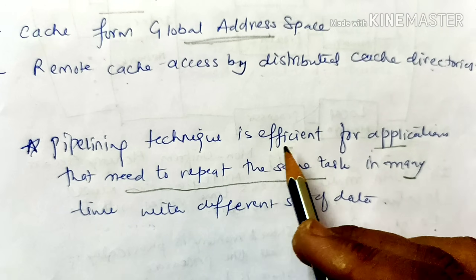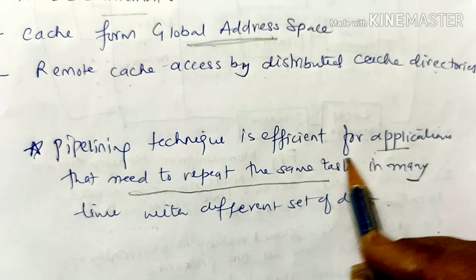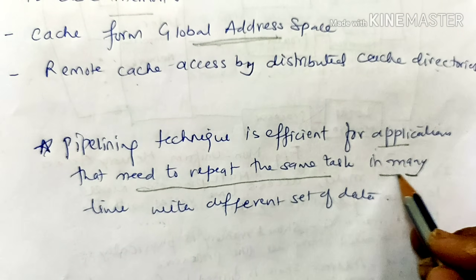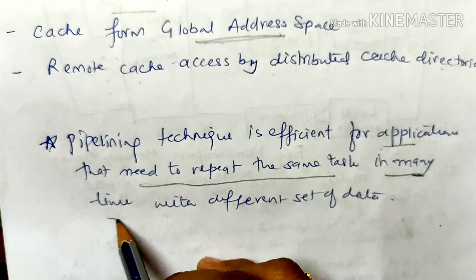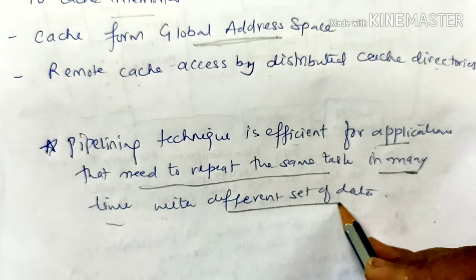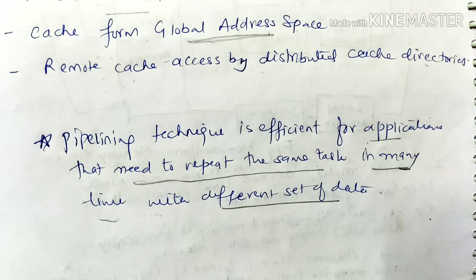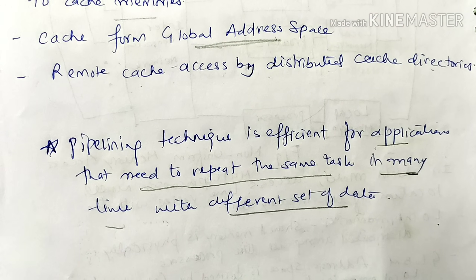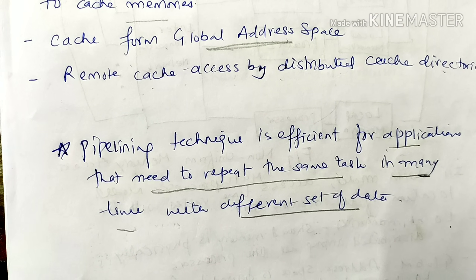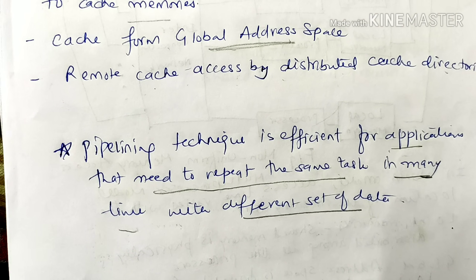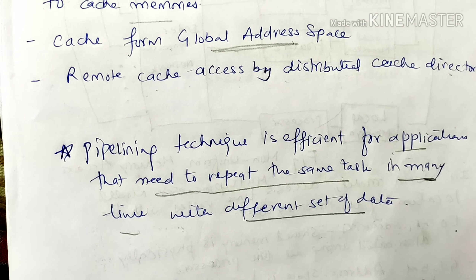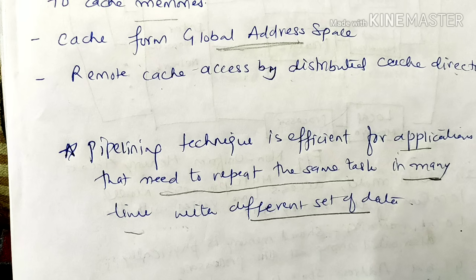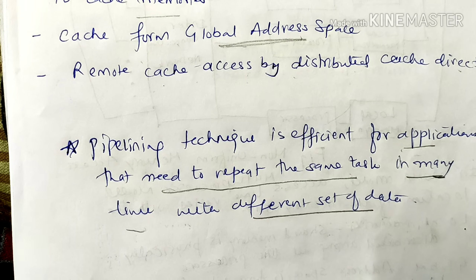Pipelining technique is efficient for applications that need to repeat the same task many times with a different set of data. So, where does pipelining apply? Where does the same task repeat multiple times with a different set of data?